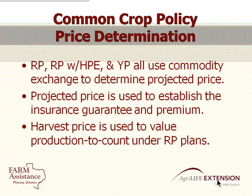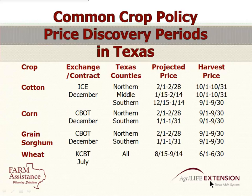For cotton, it's the ICE December contract. The spring price is set in February for northern counties, January 15th to February 14th for mid counties, and December 15th to January 14th in South Texas. Harvest price is the month of October for middle and northern counties, and September for southern counties. Corn uses the Chicago Board of Trade December contract. Northern counties set their price in February, southern counties in January, and both set their harvest price in September. Grain sorghum uses the December corn on the Chicago Board of Trade.